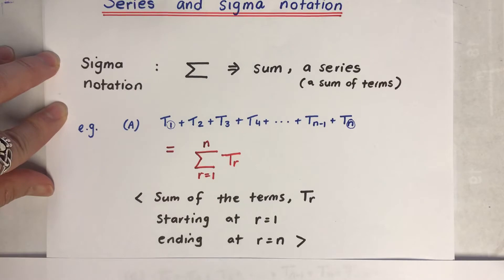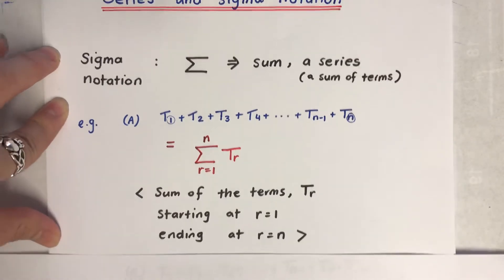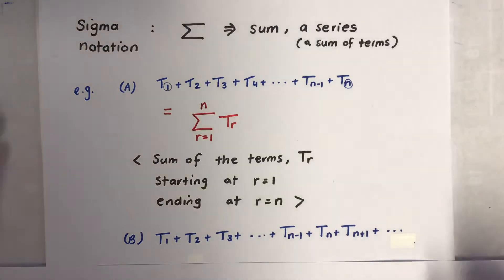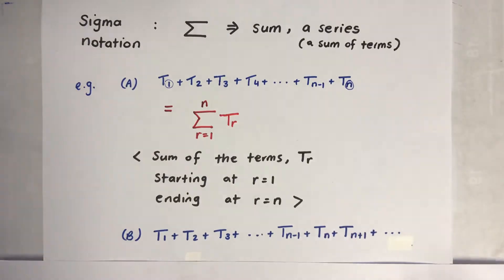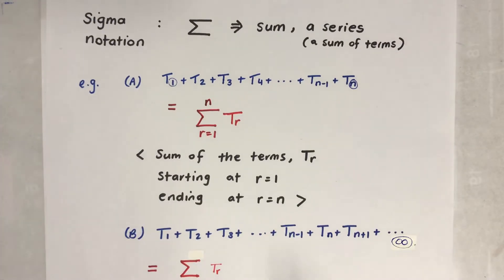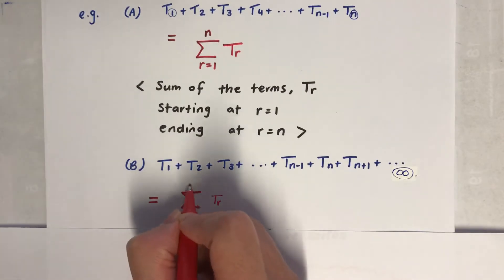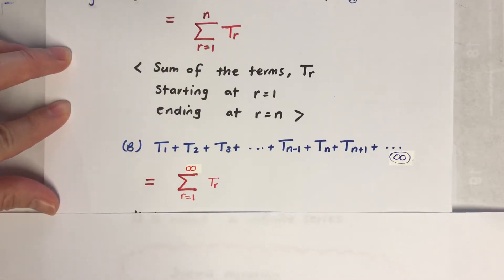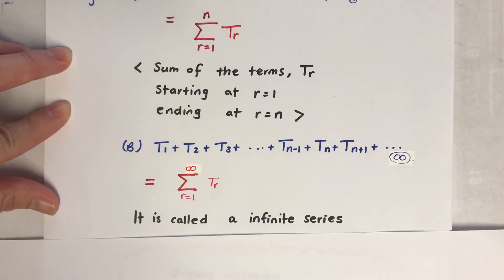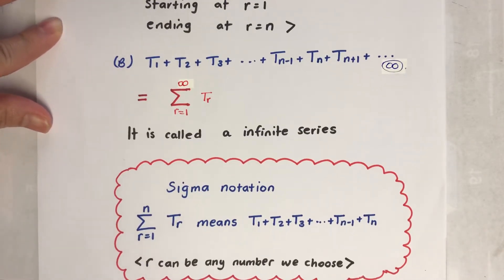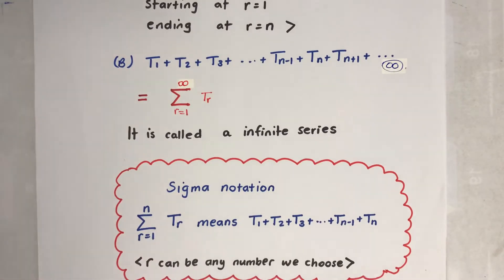So the sum of the terms is T_r, starting at r equals 1 and ending at r equals n. Now what happens if it goes forever? If there's no upper limit, we can write it as infinity. In sigma notation it will go from 1 to infinity - everything the same, just the term goes on forever. This is called an infinite series. The r can be any number we choose.